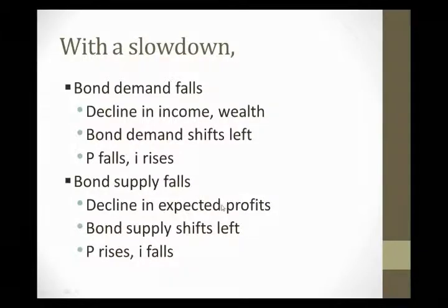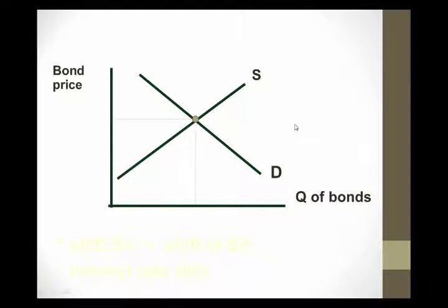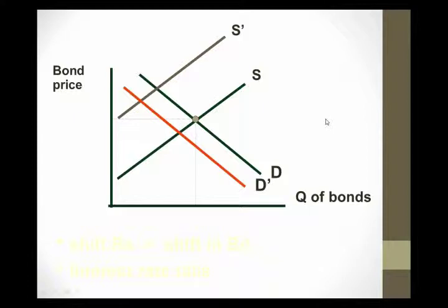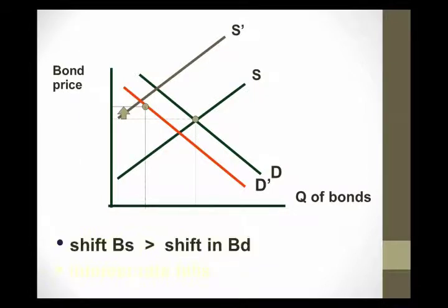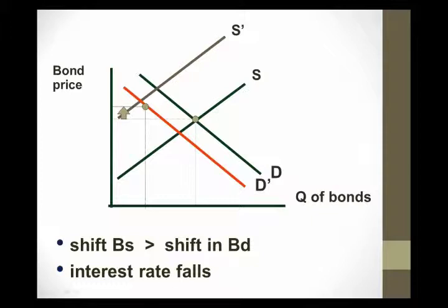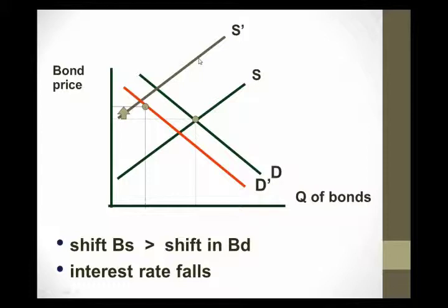Notice these two changes have opposite effects on the interest rate. What's the overall effect? Here's where we started. An economic slowdown would decrease bond supply — and I'm drawing it as a pretty large decrease, so bond supply is really sensitive to economic conditions. At the same time, bond demand decreases, but I'm drawing this as a relatively small decrease. When I put these two together, the shift in bond supply being larger than the shift in bond demand means overall the bond price rises and the interest rate falls. So the economic slowdown leads to a decline in the interest rate, stemming from the assumption that the bond supply effect is larger than the bond demand effect.